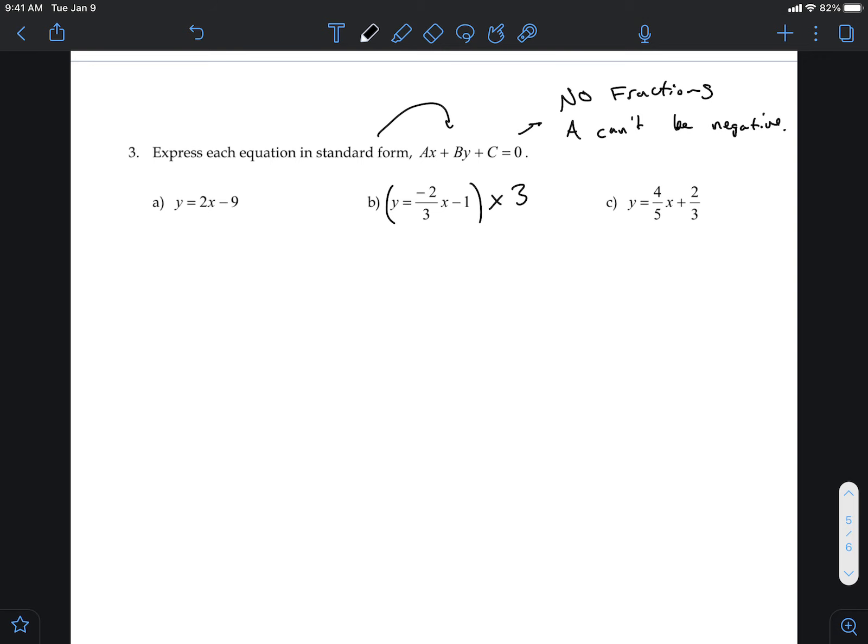When we say multiply everything, everything gets multiplied. Every little piece. Right now, I see one piece, two pieces, three pieces. Would everybody agree? Three terms, if you will. So all three red terms need to be multiplied by three.